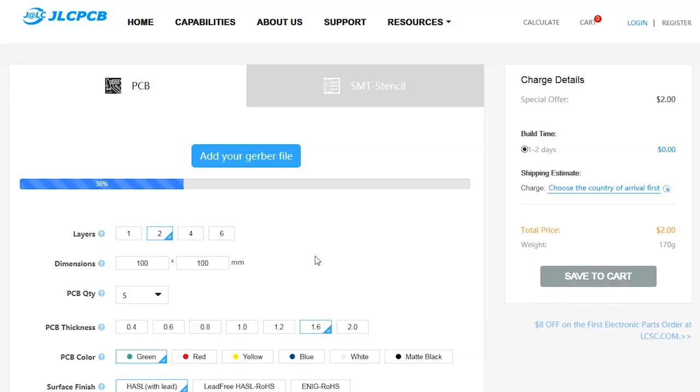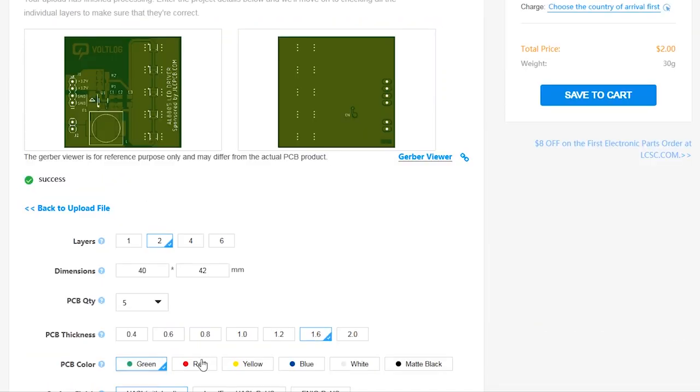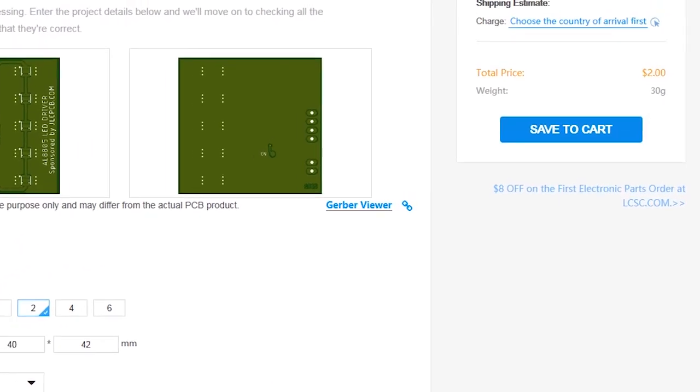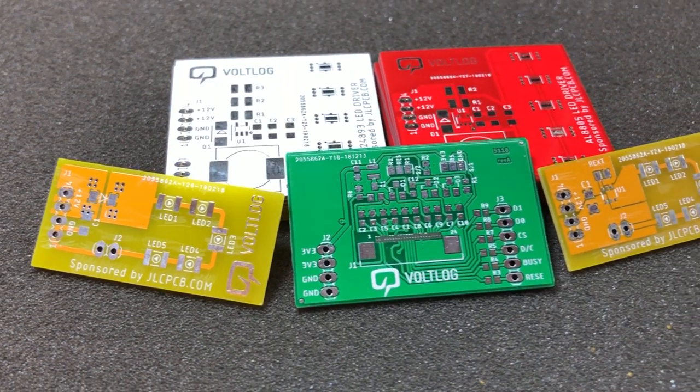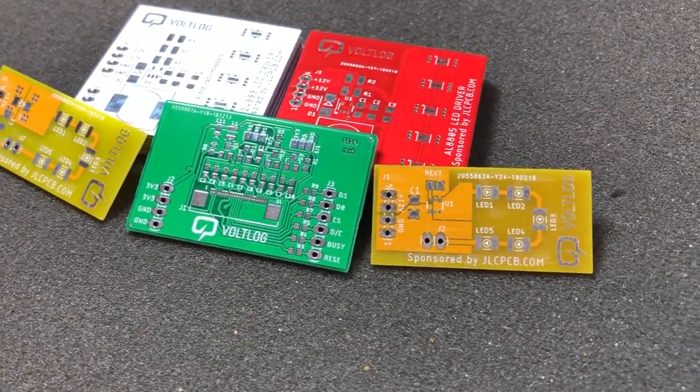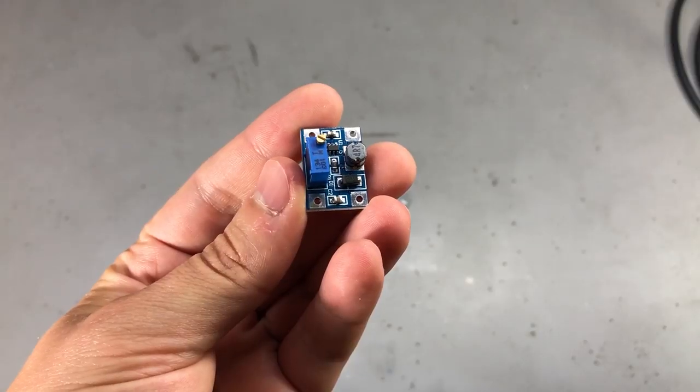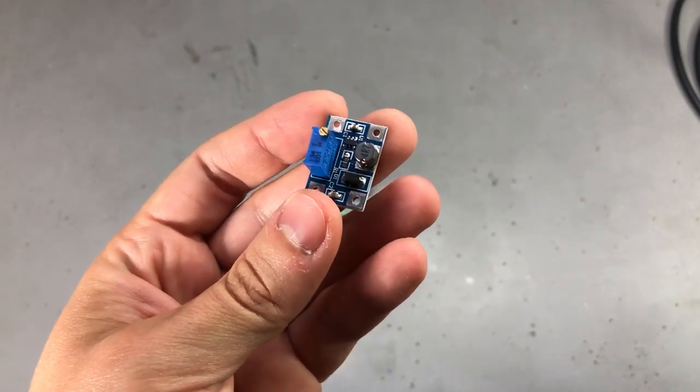This video is sponsored by JLCPCB.com who recently upgraded their offer so you now get 24 hours turnaround time and you can choose any solder mask color for the same price of just $2. Prototyping is now faster and cheaper so it's definitely worth checking them out.